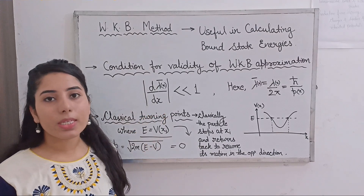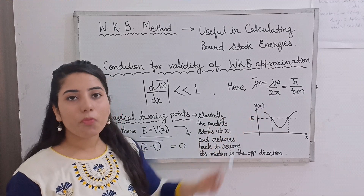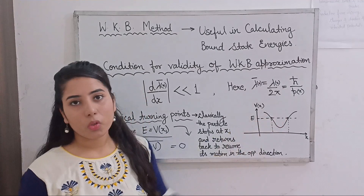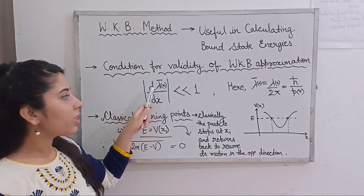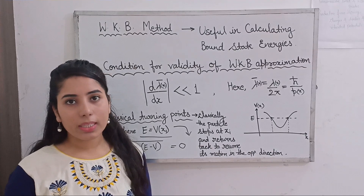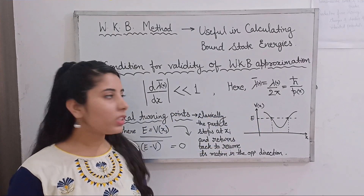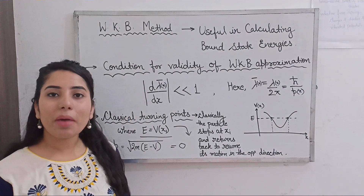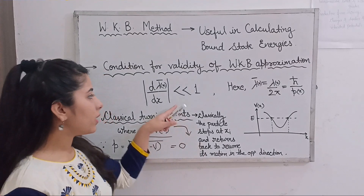Now, what does λ̄(x) represent? It equals λ(x) divided by 2π. If we want to write it in terms of momentum, it is ħ/p(x), where p is momentum, which is also a function of x. If we substitute the λ̄ value into the validity condition, the condition changes slightly, so it should be clear what each term represents.